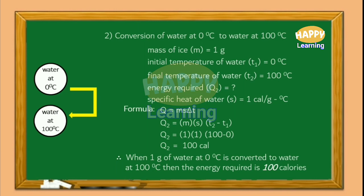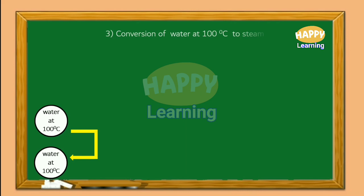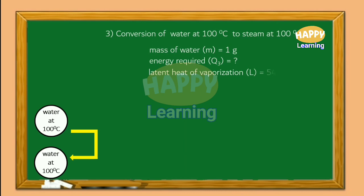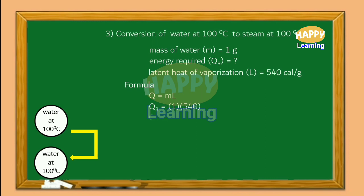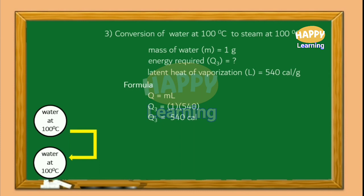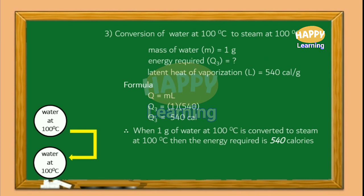Stage 3 — conversion of water at 100 degrees Celsius to steam at 100 degrees Celsius. Mass M equal to 1 gram. Latent heat of vaporization L equal to 540 calories per gram. As it is a case of phase change, we use Q equal to M L. So Q3 equal to 1 into 540, giving Q3 equal to 540 calories. Therefore, the energy required to convert 1 gram of water at 100°C to steam at 100°C is 540 calories.